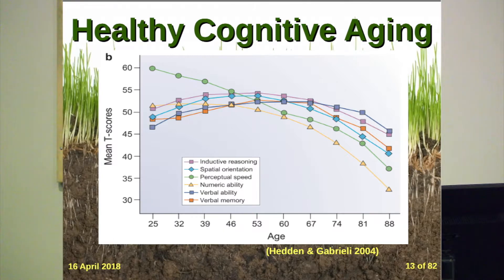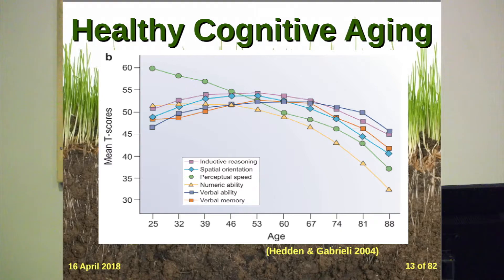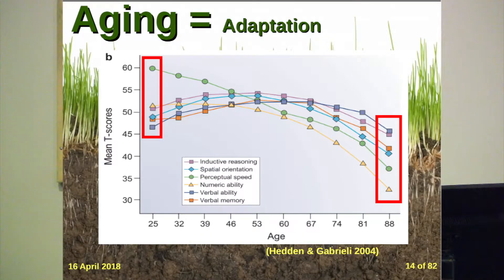Longitudinal data from the Seattle Longitudinal Study shows all these different cognitive domains aging in their own ways. In psychology we're very good at developing new tests using cheap volunteers — undergraduate students. We get excited about tests measuring perceptual speed, flexibility, and reasoning, which are strengths of the 25-year-old but weaknesses in an older person. Speed is not the strength of an 80-year-old. But the weakest point of a 25-year-old is verbal ability — which is the strength of the 80-year-old. So is it really worse? It's a difference, different skill sets — fluid ability versus crystallized ability.